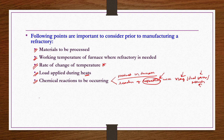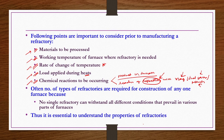All these characteristics cannot be achieved in one type of refractory, and even if technically possible, it may not be economically feasible. That is why any furnace uses different types of refractories for its construction. Both physical and chemical properties are essential in selection of a refractory for construction of any furnace.